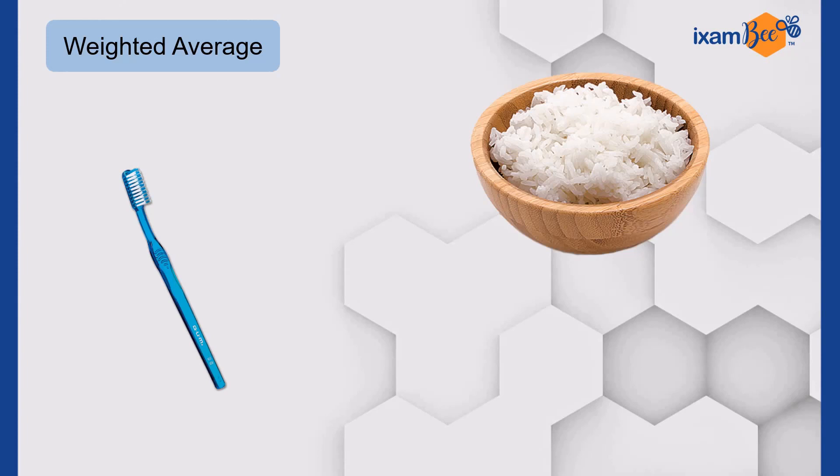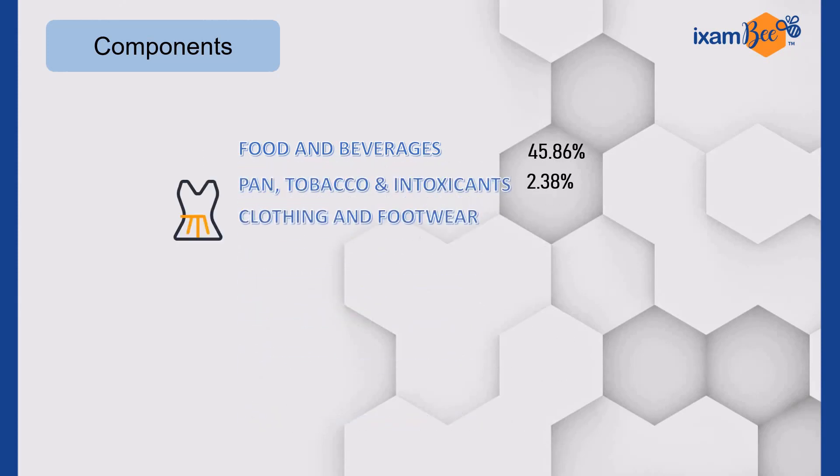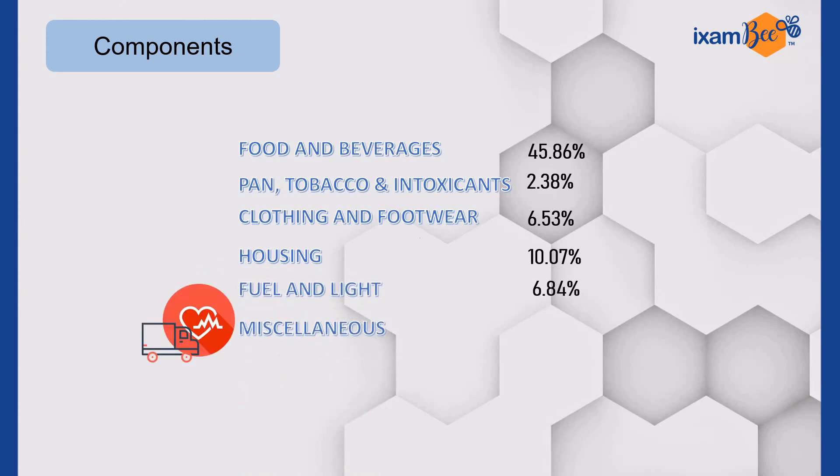Let us see how weightage of things vary in consumer price index products in India. Foods and beverages carry a weightage of 45.86% - it is the highest. Intoxicants carry 2.38%. Clothing and footwear carries 6.53%. Housing carries 10%. Fuel carries 6.84%. And miscellaneous products like transport and healthcare etc. carry the rest 28.32%.